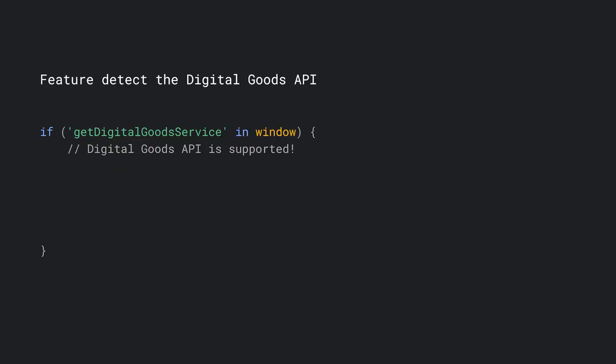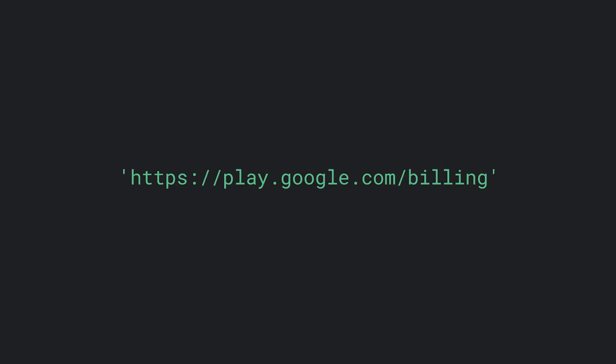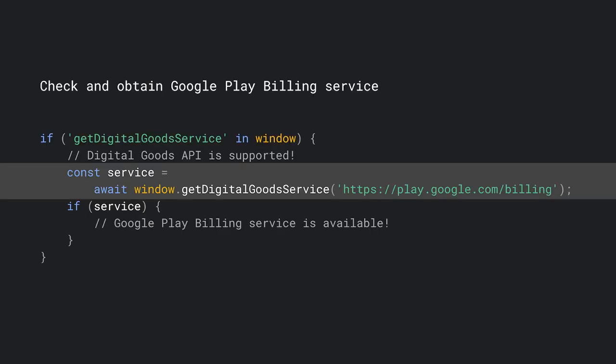At the moment, the Digital Goods API is only supported by Chrome if your PWA is running as a trusted web activity from the Play Store. You can detect if the API is available by checking the existence of the GetDigitalGoodsService method in the Window object. If it exists, go ahead and get the service. We use the URL play.google.com/billing to let the Digital Goods API know that we want to use the Google Play Store. You can call the GetDigitalGoodsService method with this URL to get an instance of the service connected to Google Play. If the service is unavailable, null is returned instead.